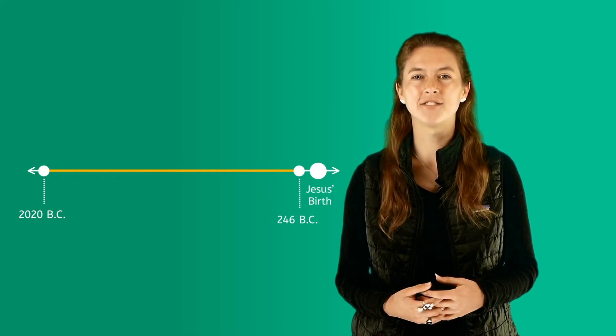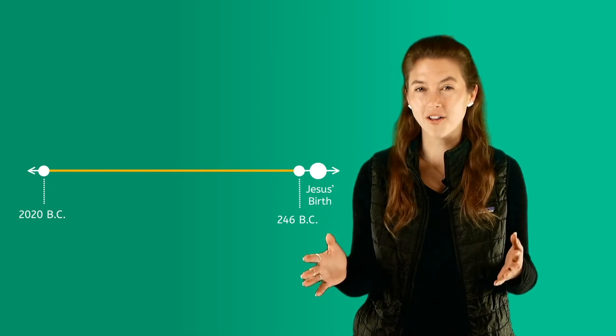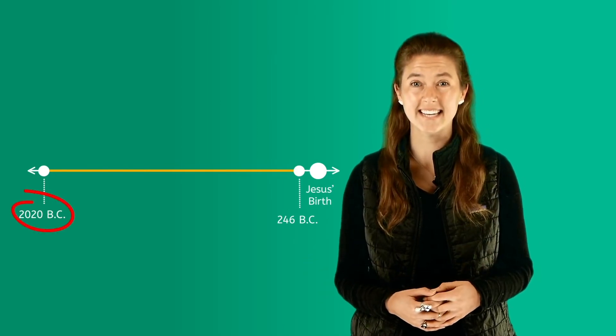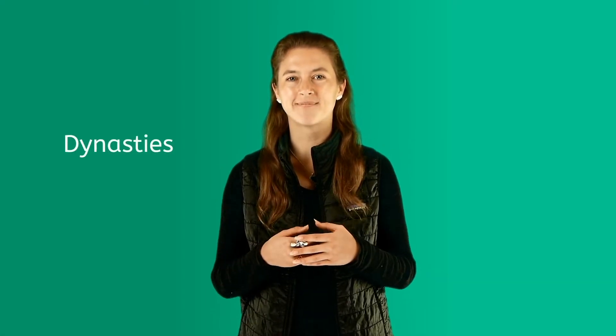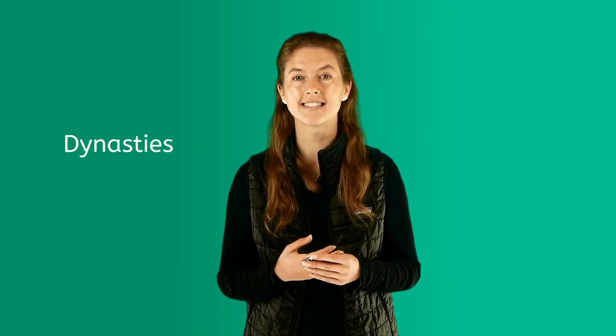The earliest written records from the ancient Chinese culture go back all the way to 2020 BC. Ancient Chinese history is broken up into time periods called dynasties. Each dynasty lasted as long as a particular family ruled and was named after them.